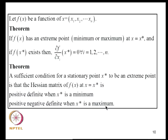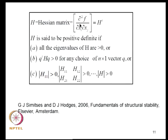Now consider a function of several variables F(X1, X2, ..., XN). If F has an extreme point at X = X*, then ∂F/∂Xi at X* equals zero for i = 1 to N. A sufficient condition for a stationary point X* to be an extreme point is that the Hessian matrix of F at X* is positive definite when X* is a minimum, and negative definite when X* is a maximum. The Hessian matrix has elements H_ij = ∂²F/∂Xi∂Xj, and since mixed partials are equal, this matrix is symmetric.